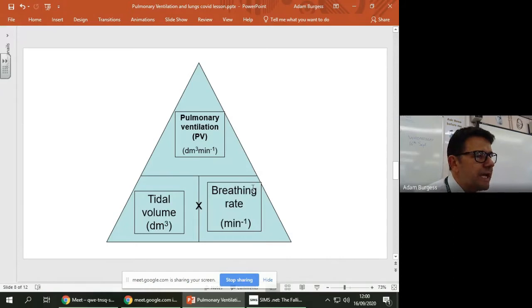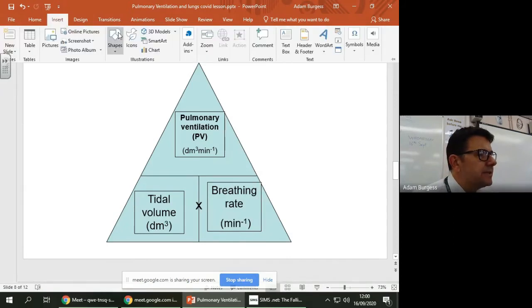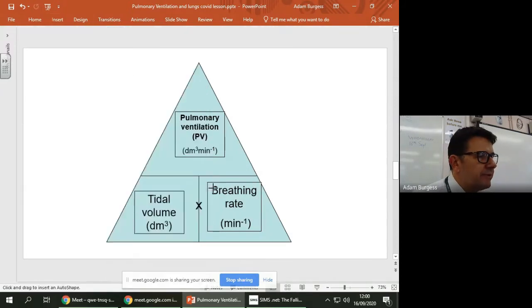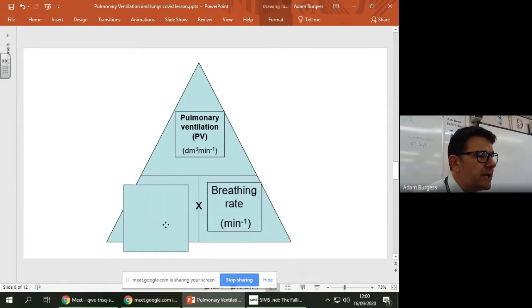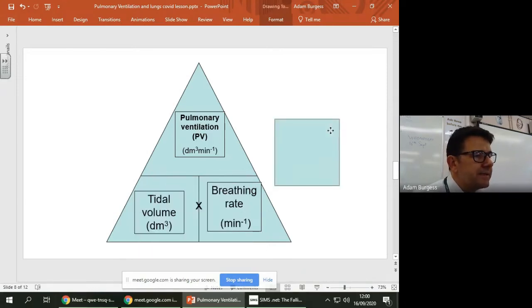And then, however, if I wanted to work out breathing rate, well, I could stick my finger over, this is my finger, there you go. I want to work out breathing rate, so it would be pulmonary ventilation divided by tidal volume. And if I wanted to work out tidal volume, put my finger over tidal volume, and that would give me pulmonary ventilation divided by breathing rate. Okay.